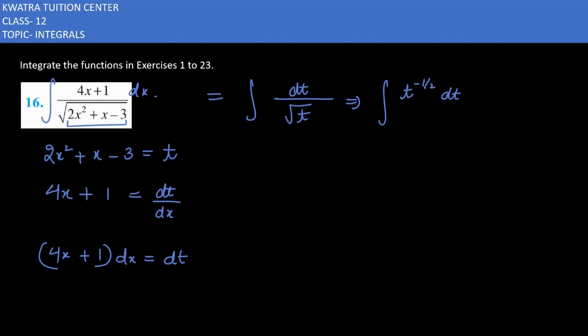Now you have to take the integration of t raised to the power -1/2. It can be written as t^(-1/2 + 1) over (-1/2 + 1) plus a constant.